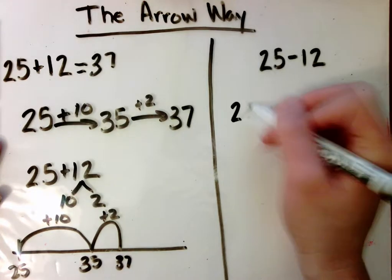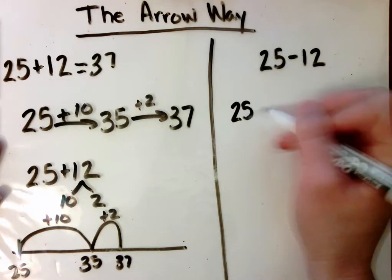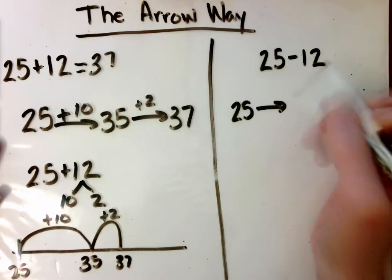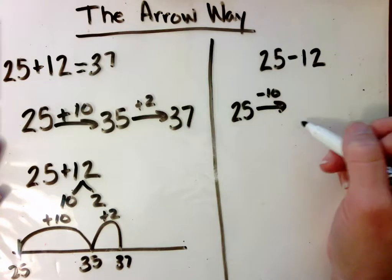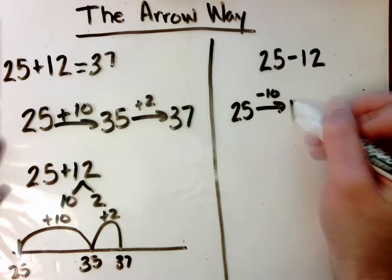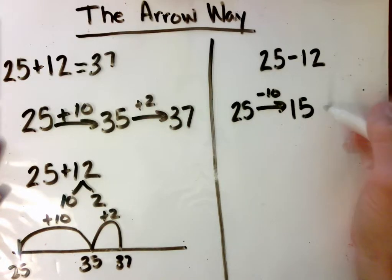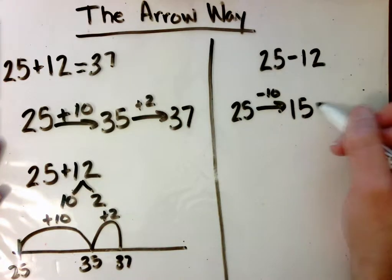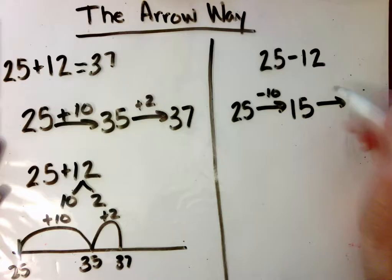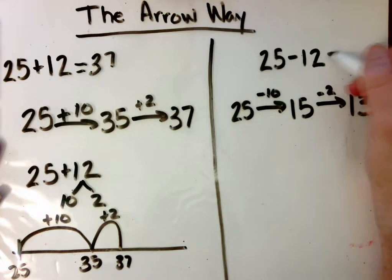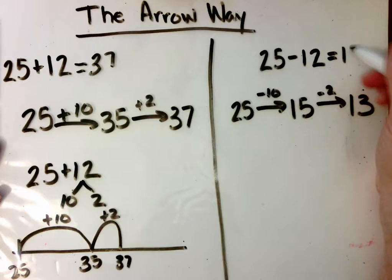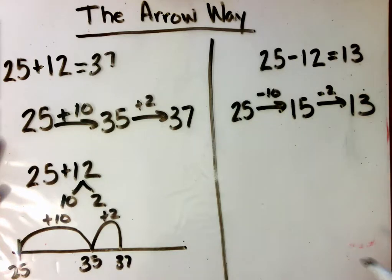We're starting at 25. We're going to take away 10, which brings us to 15. We still need to take away 2 more, so that brings us to 13. 25 minus 12 equals 13.